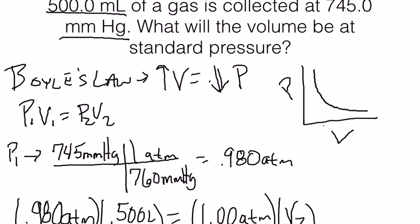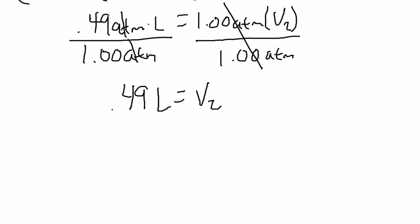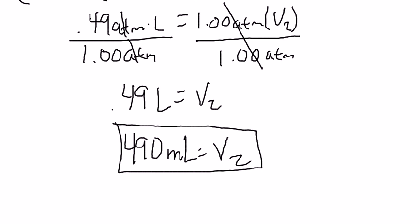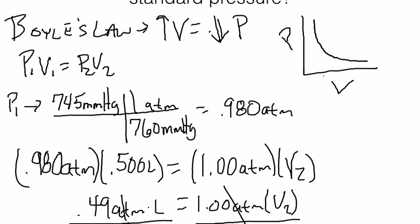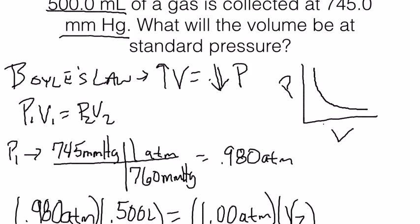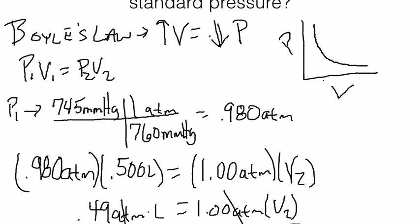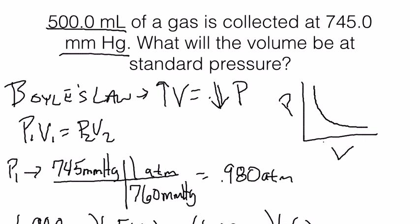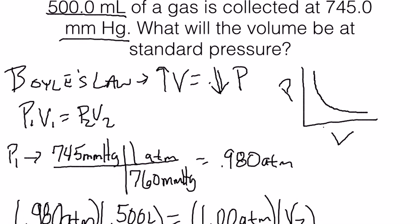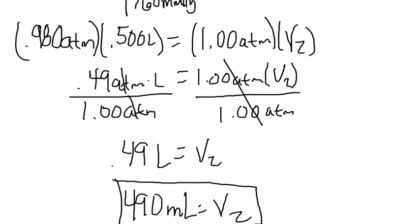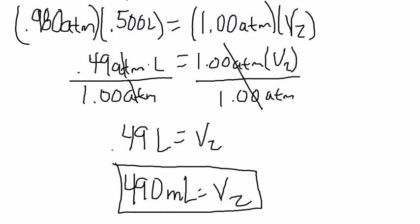Let's compare that to our initial of 500 milliliters. This would be 490 milliliters is equal to V2. Now let's make sure this makes sense within the context of the problem. We increased our pressure ever so slightly, 0.98 atmospheres to 1 atmospheres. Our starting volume was at 500 milliliters, so we increased pressure, and so we should have had a decrease in volume to 0.49 liters, or 490 milliliters. So this answer makes sense. I hope this video helps you understand Boyle's Law a little better.